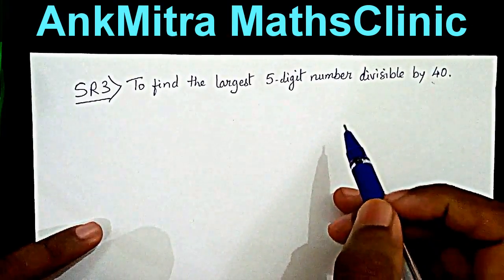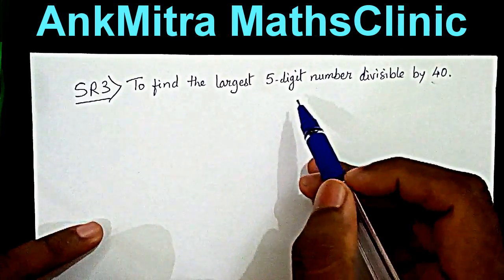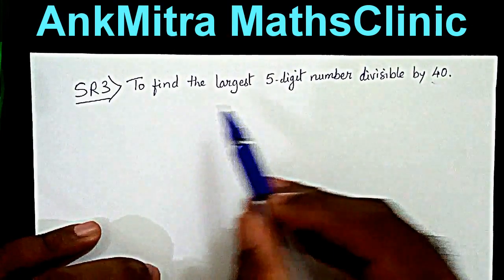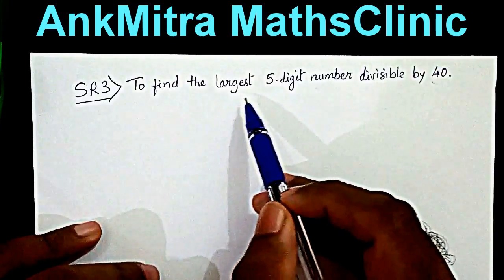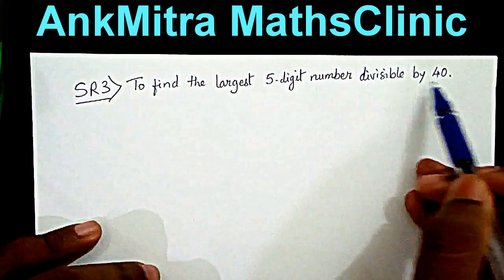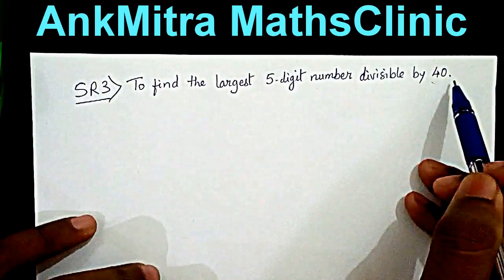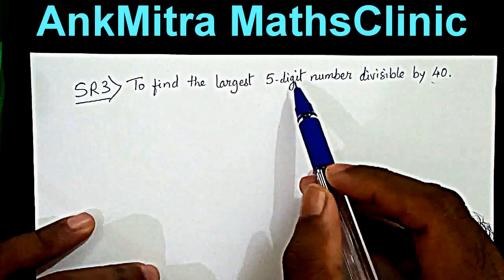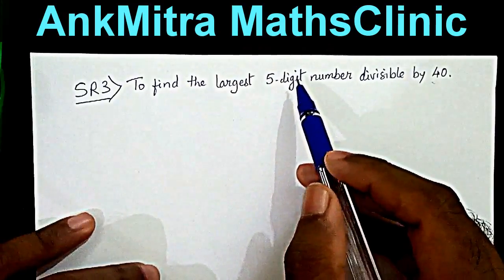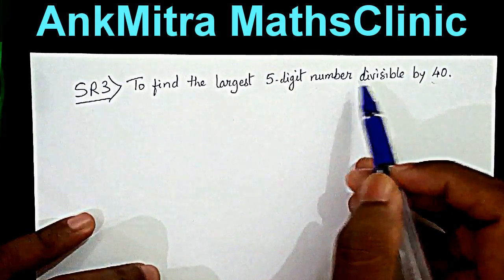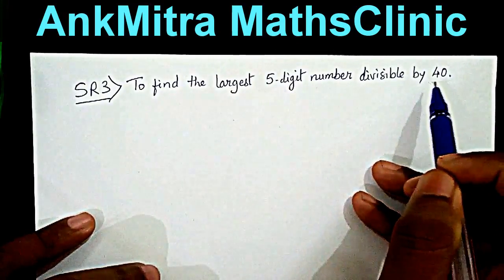Hello friends, this is another question coming from one of the subscribers. We are asked to find the largest five-digit number that is divisible by 40. The trick is to find the smallest six-digit number that is divisible by 40.